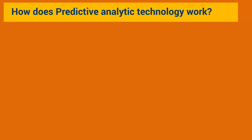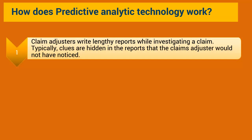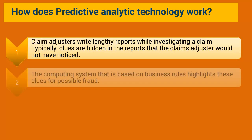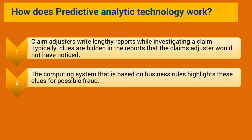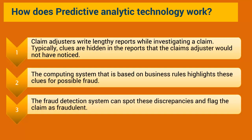The predictive analytics technology has three steps. First, it is important to remember that claims adjusters write detailed reports when investigating a claim; these reports usually contain clues that the adjuster may not have noticed. The computing system highlights these clues indicating possible fraud. The fraud detection system then spots discrepancies and flags the claim as fraudulent.